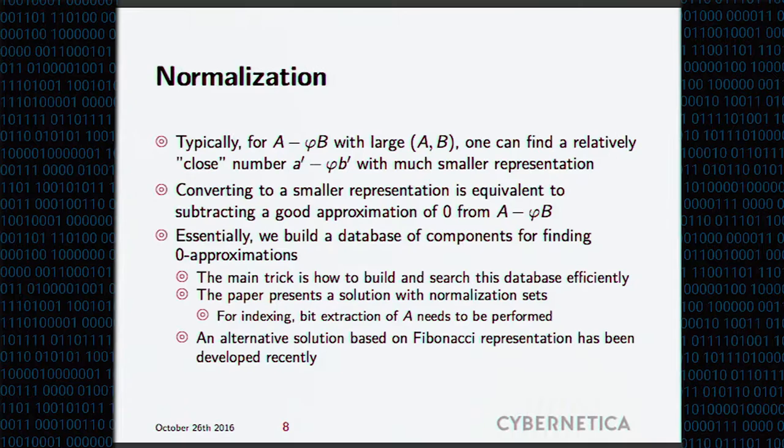Luckily, it is the case that these golden section numbers are not unique representation. So what you can do, typically, is whenever you have a number with large representants, where the number itself is not necessarily large but the representants are large due to multiplication, you're typically able to find a relatively close number where the exact meaning of close is detailed in the paper. But you very often can replace the number with large representants with a close one having much smaller representants. You lose some precision, but that's the trade-off you make.